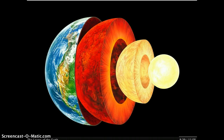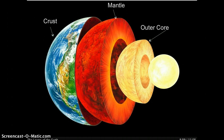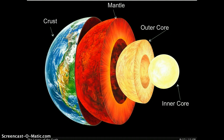Now it's time to quiz yourself about the layers of the Earth. Can you label the layers from outermost to innermost? The order is: crust, mantle, outer core, and inner core. Which layer is the thickest? The mantle. Which layer is the thinnest? The crust.